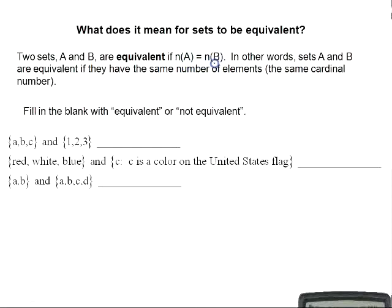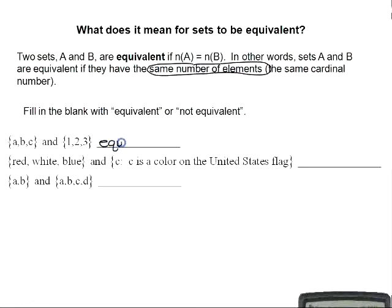Two sets A and B are equivalent if the cardinal number for set A equals the cardinal number for set B — in other words, if they have the same number of elements. The set containing {A, B, C} and the set containing {1, 2, 3} both have three elements, so these sets are equivalent.